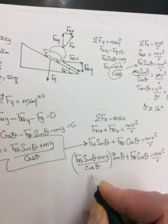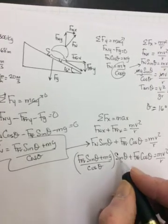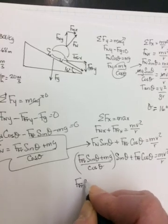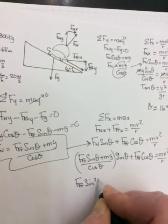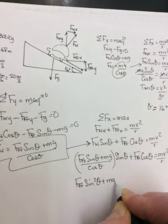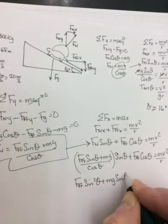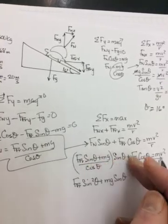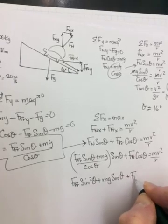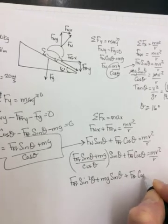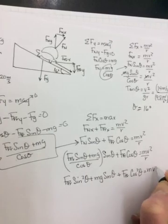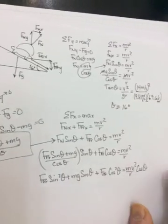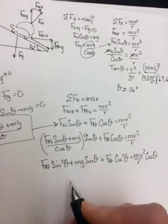So multiply everything by cos theta to get it off the bottom. And multiply your sine theta through. So it will be Ffr sine squared theta plus mg sine theta. So I multiplied my sine through. And now multiplying by cos theta, that will get it off the bottom here. In the next term, it will become friction times cos squared theta. And that will equal mv squared over r. And don't forget you have to multiply this by cos theta as well.